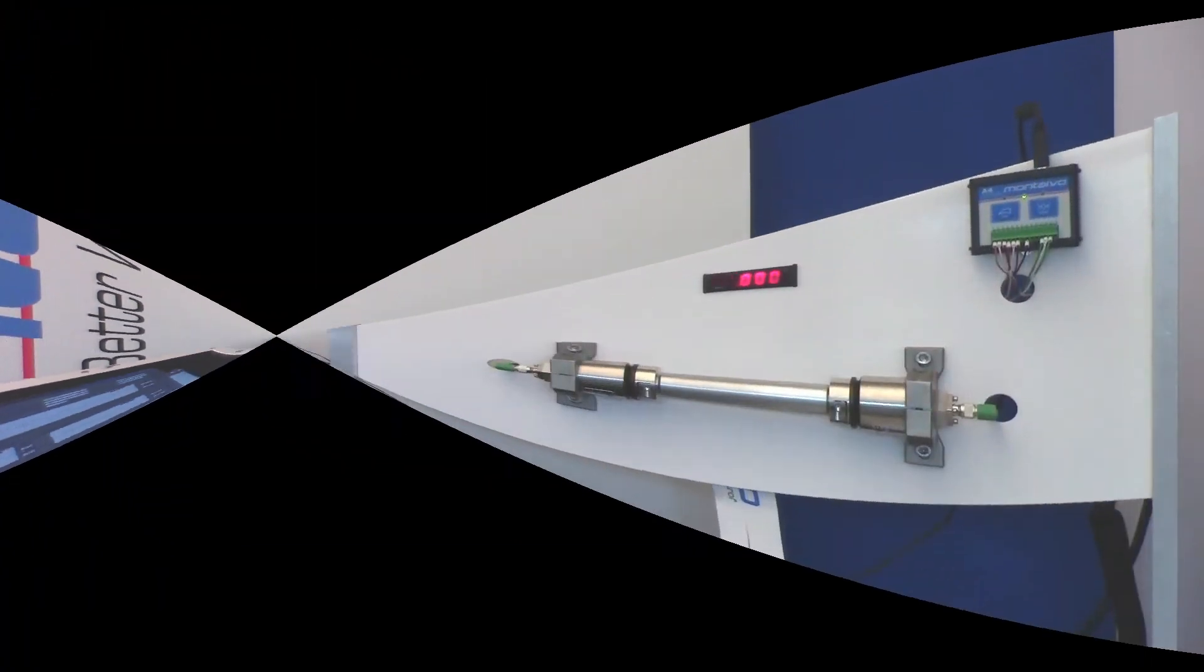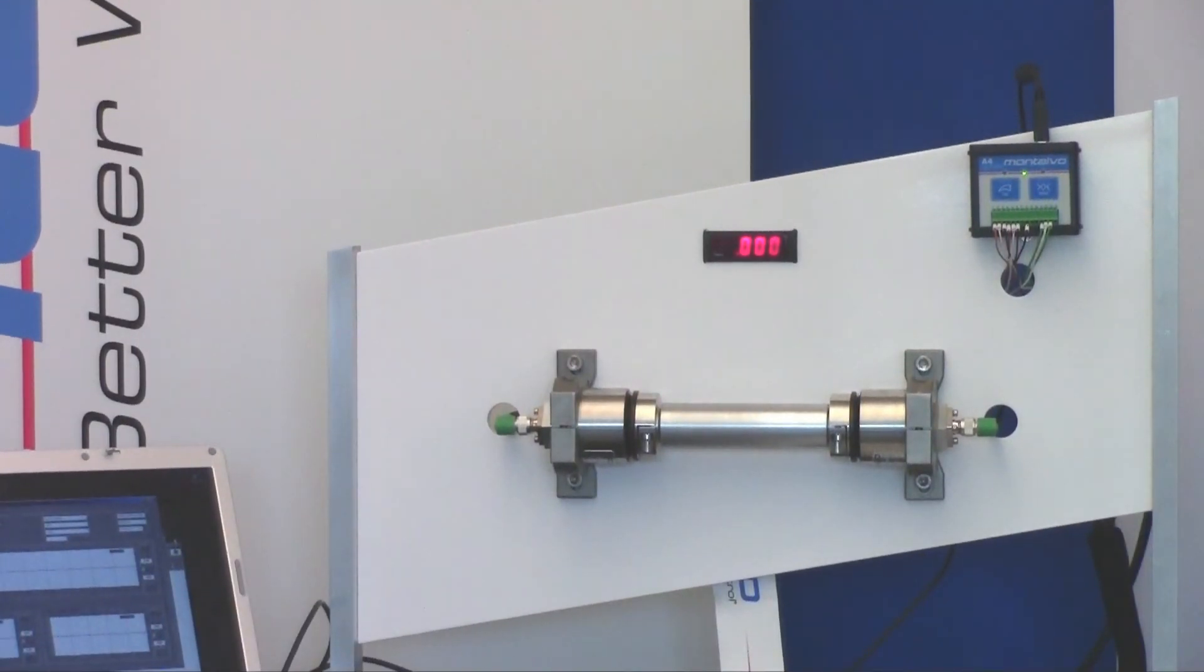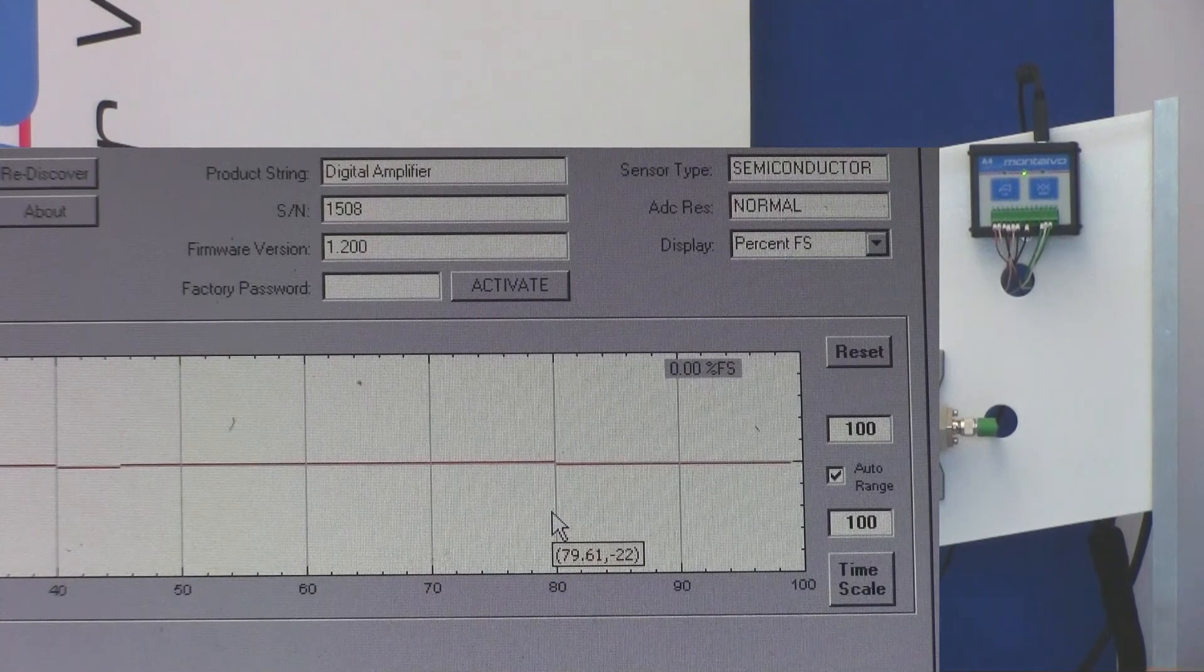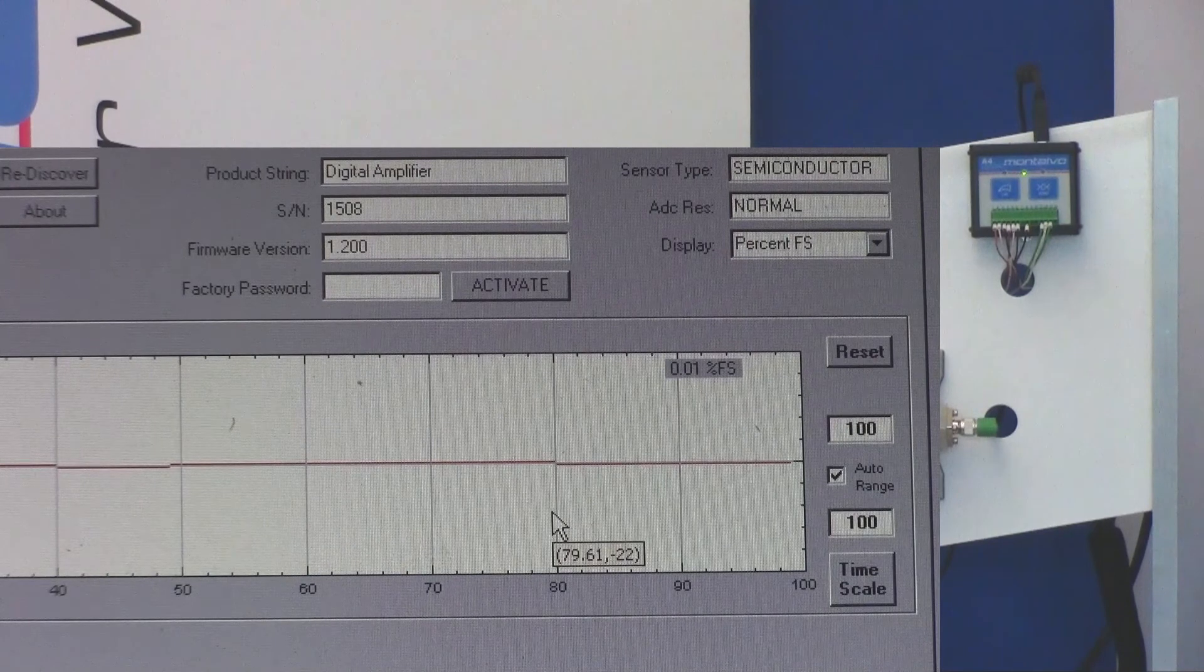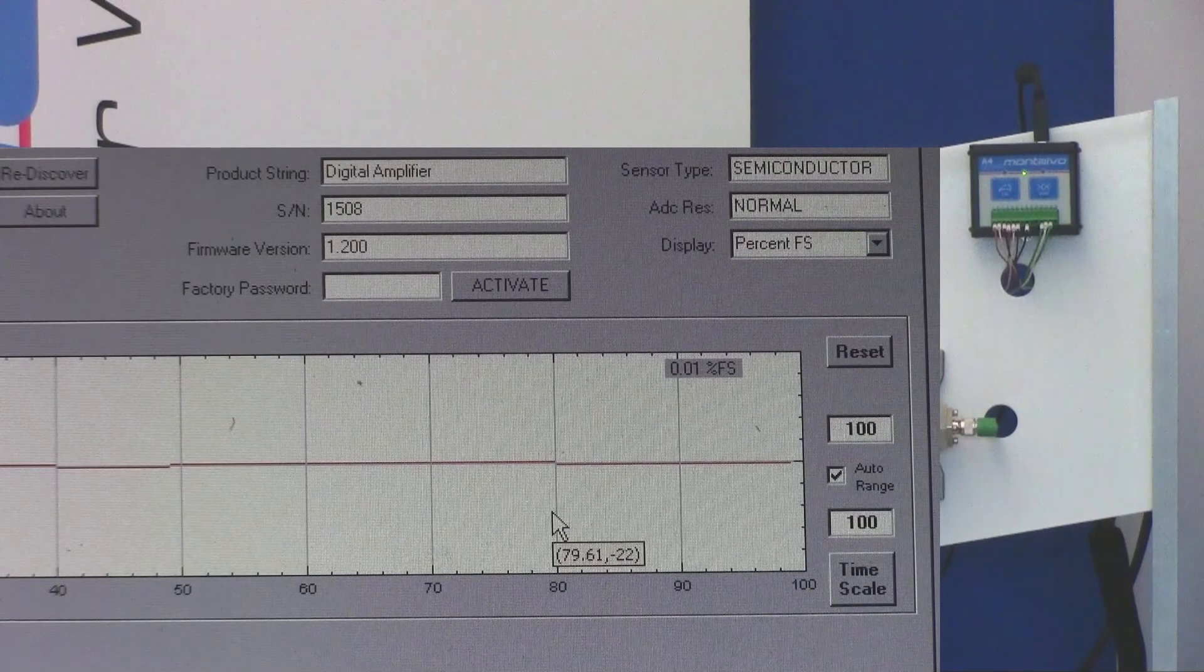So, let's rewind the data and take a look. As you can see, the load cells are reading 0.01% of their full scale. Only five grams and the load cells are registering a change in tension.